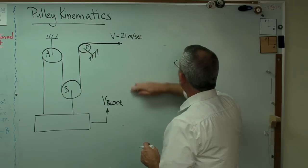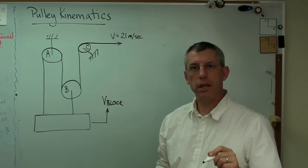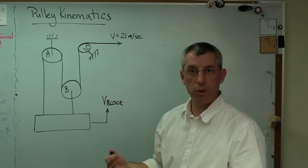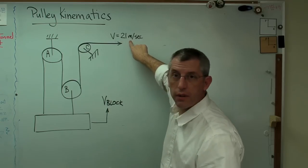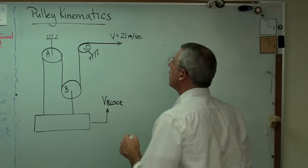The process is, I'm going to write an expression for the length of this rope, and then I'm going to take the time derivative of it so I can find how the different lengths change with respect to time, because that's just meters per second. That's just a change in length with respect to time.